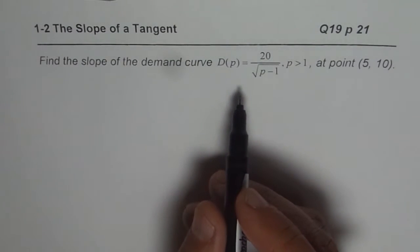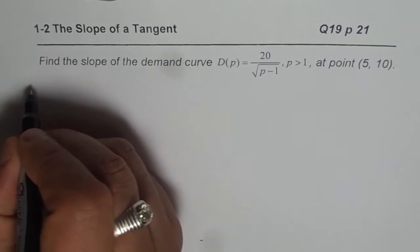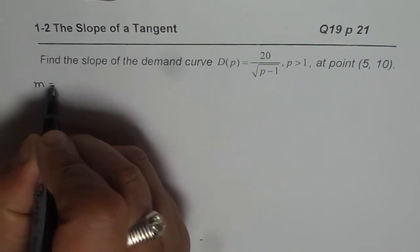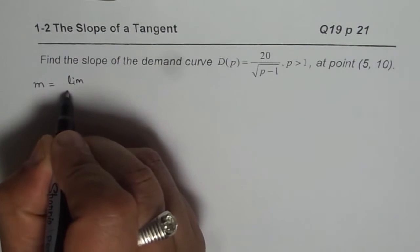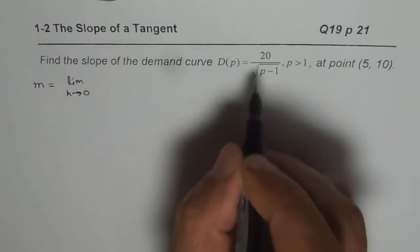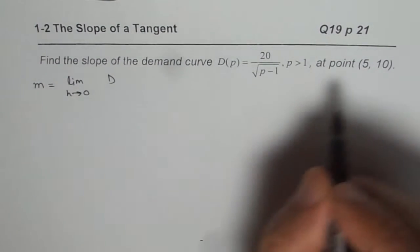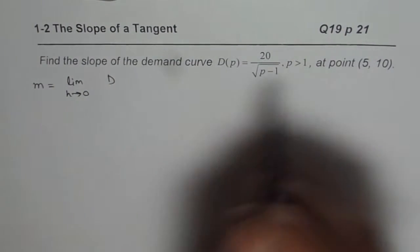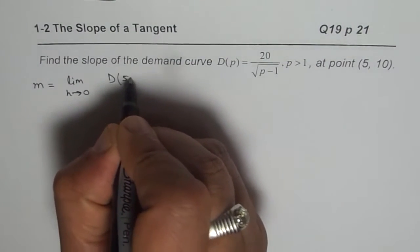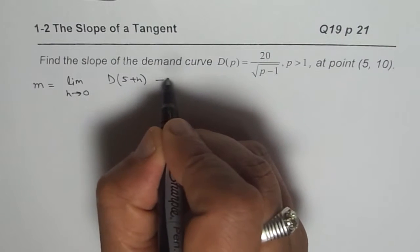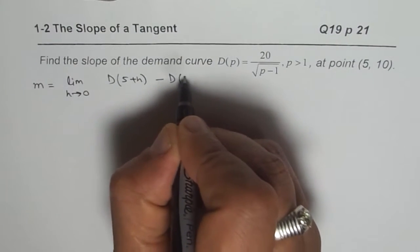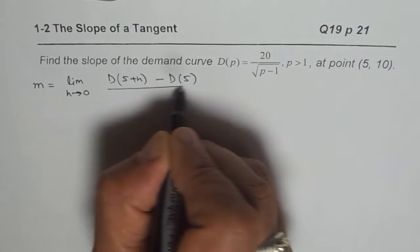We will go with the definition of the slope of the tangent. Now, slope of the tangent M equals limit as H approaches 0. For this function, we need to find the tangent at 5.